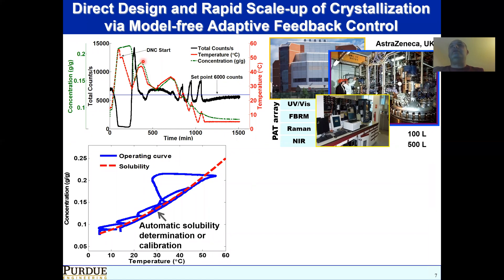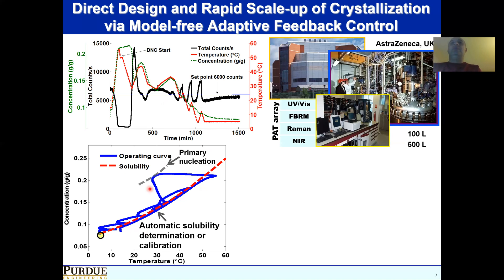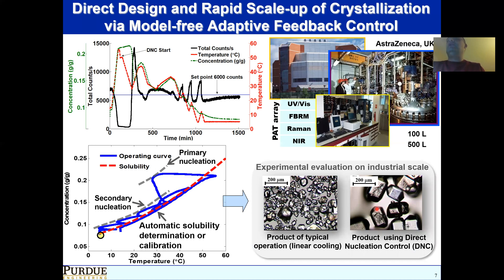An example of applying this platform to an industrial crystallization process is shown here. We use focused beam reflectance measurement to measure the number of particles and automatically tailor temperature profiles to maintain the desired conditions. Nucleation happens, which significantly overshoots the desired count, and multiple heating-cooling cycles identify the operating zone of the crystallization. This generates very nice product crystals with uniform size distribution and large particle size, much better compared to the traditional linear cooling product.